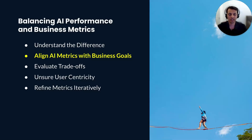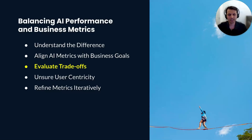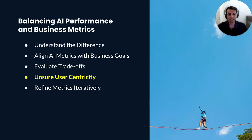AI metrics should align with business goals. For example, if a business goal is to improve customer satisfaction, an AI metric could be the accuracy of customer sentiment analysis. Improving AI performance doesn't always lead to better business outcomes — sometimes pushing for a higher AI metric could negatively affect user experience and consequently the business metrics. User experience is key; metrics related to speed, accuracy, and utility of the AI product are all important for ensuring user satisfaction.